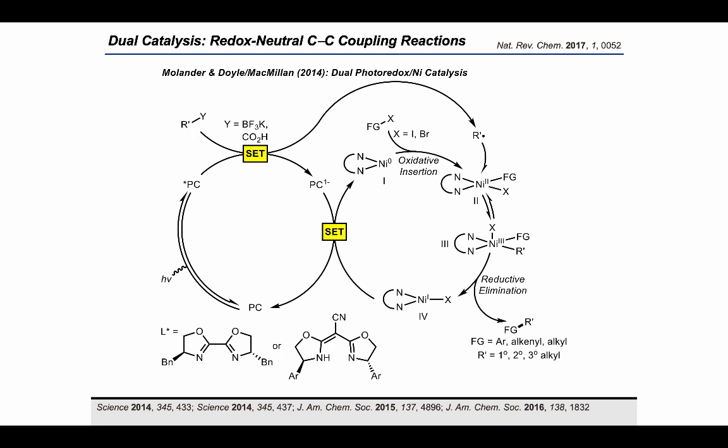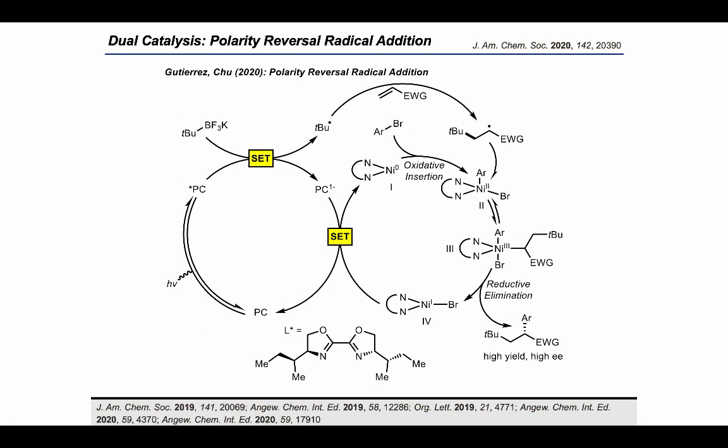Molander and later McMillan and Foo developed enantioselective variants of this reaction, showing the diverse applicability of this process. This transformation has recently been applied to a three-component polarity reversal radical addition strategy in an enantioselective manner. Gutierrez and Chu showed that the nucleophilic tert-butyl radical selectively adds to the electrophilic acrylate rather than undergoing addition and reductive elimination at the nickel center, resulting in the three-component coupling product over the two-component product. Computation supported that addition to the nickel center may occur through a tetrahedral nickel complex rather than a square planar one, and electronically the nucleophilic radical preferentially adds to the electrophilic acrylate over the relatively electron-dense transition metal center.